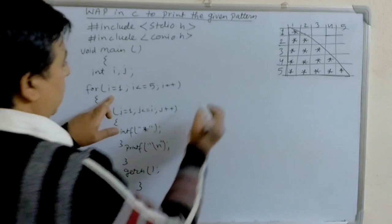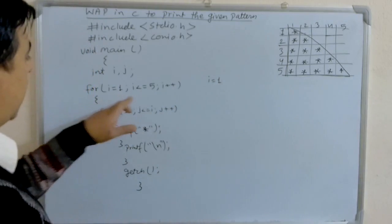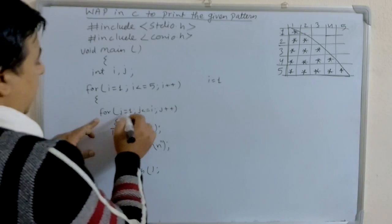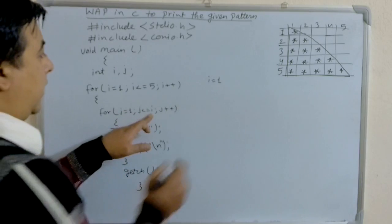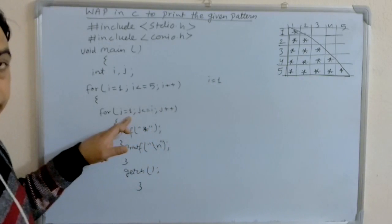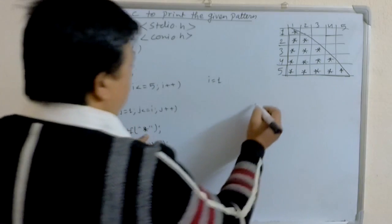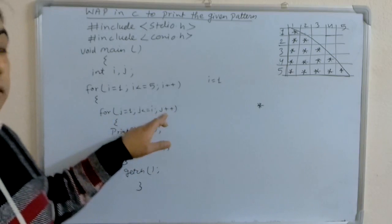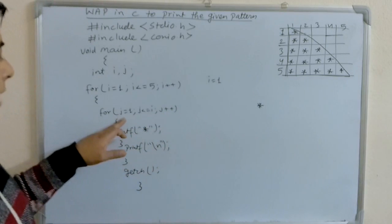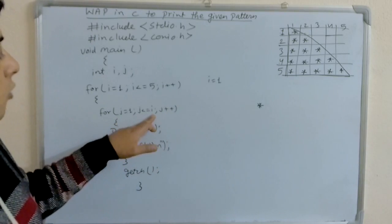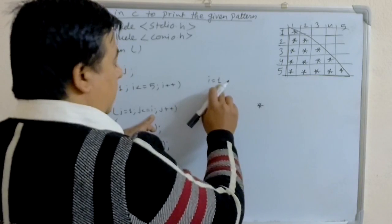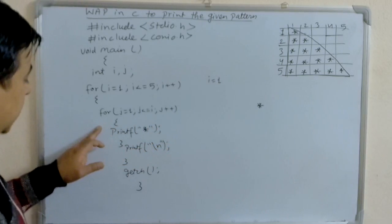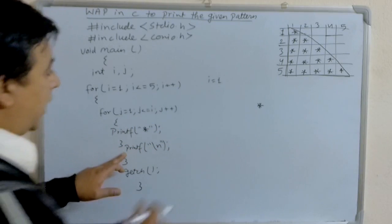It starts with i equal to 1. i less than or equal to 5 is true, so it enters the inner loop. j is equal to 1, j less than or equal to i — the value of i is 1, so it is true and it prints one asterisk sign. Then j increases to 2; 2 less than or equal to 1 is false, so it comes out of the inner loop, goes to the next line, and i increments to 2.